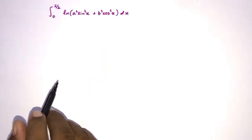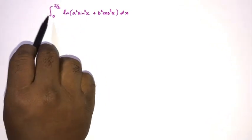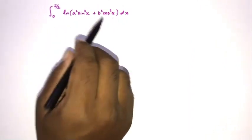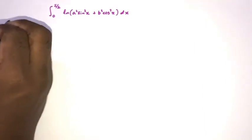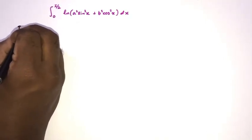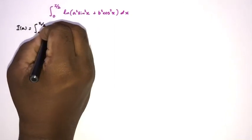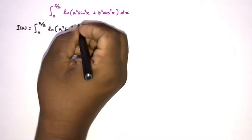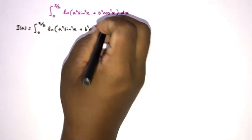Hello everyone, welcome to Mathematics. In this video we are going to solve this interesting integral: the integral from 0 to π/2 of the natural log of (a²sin²x + b²cos²x) dx. To begin, I am going to set this integral equal to I of a, so we can write I(a) = ∫₀^(π/2) ln(a²sin²x + b²cos²x) dx.